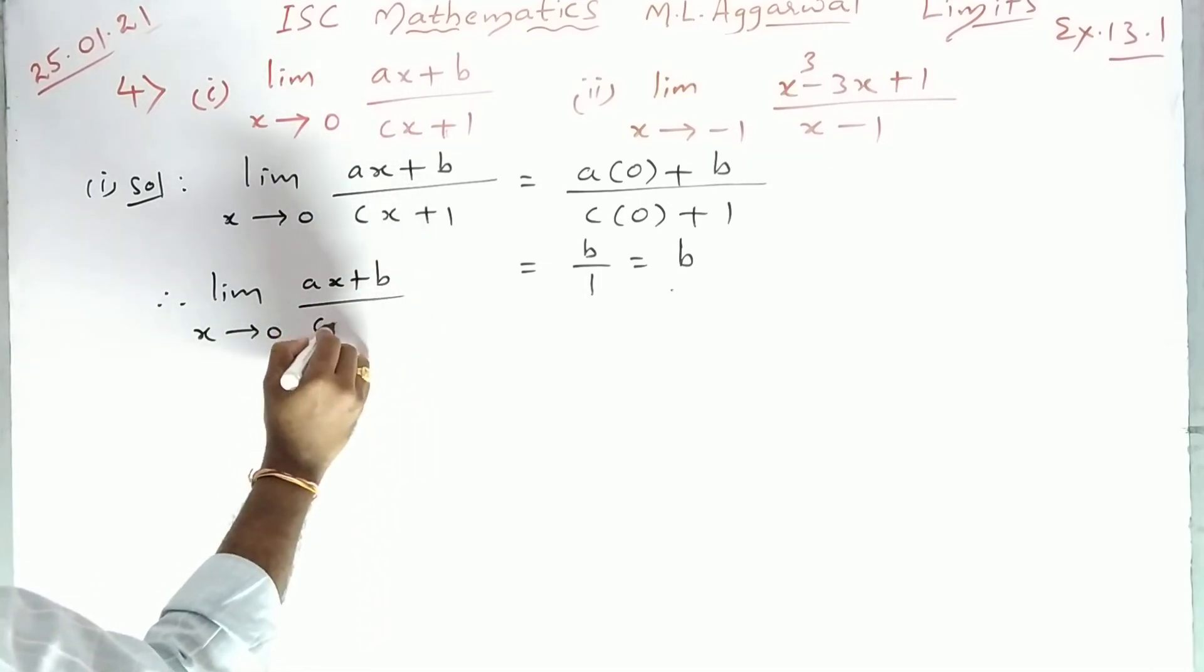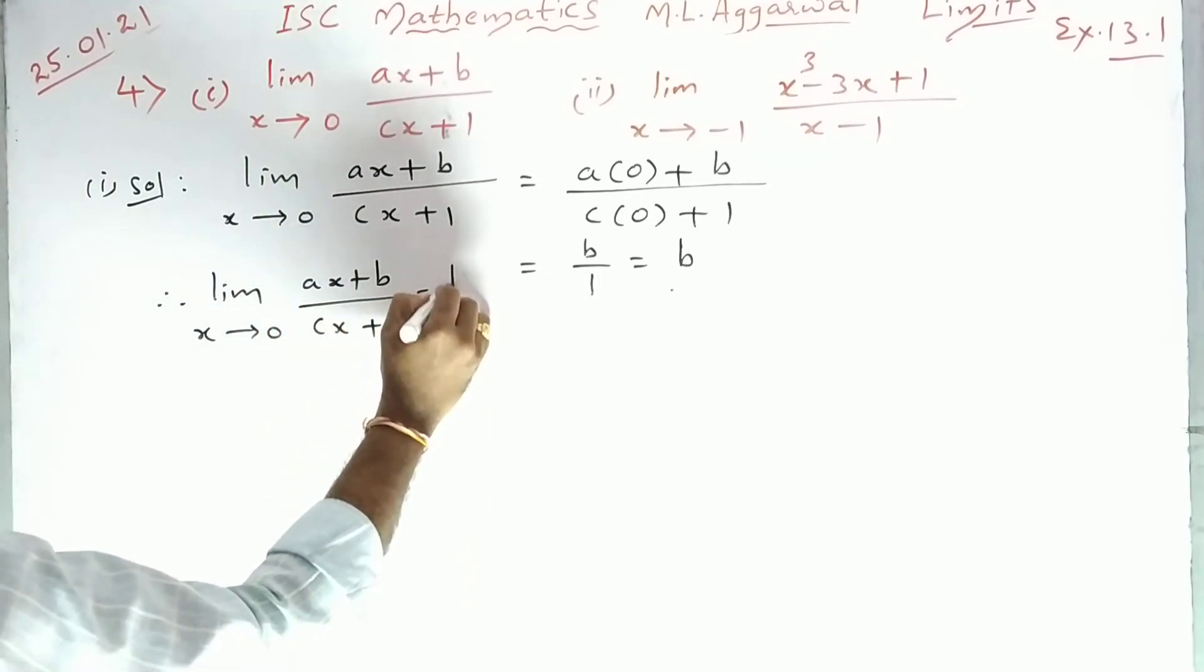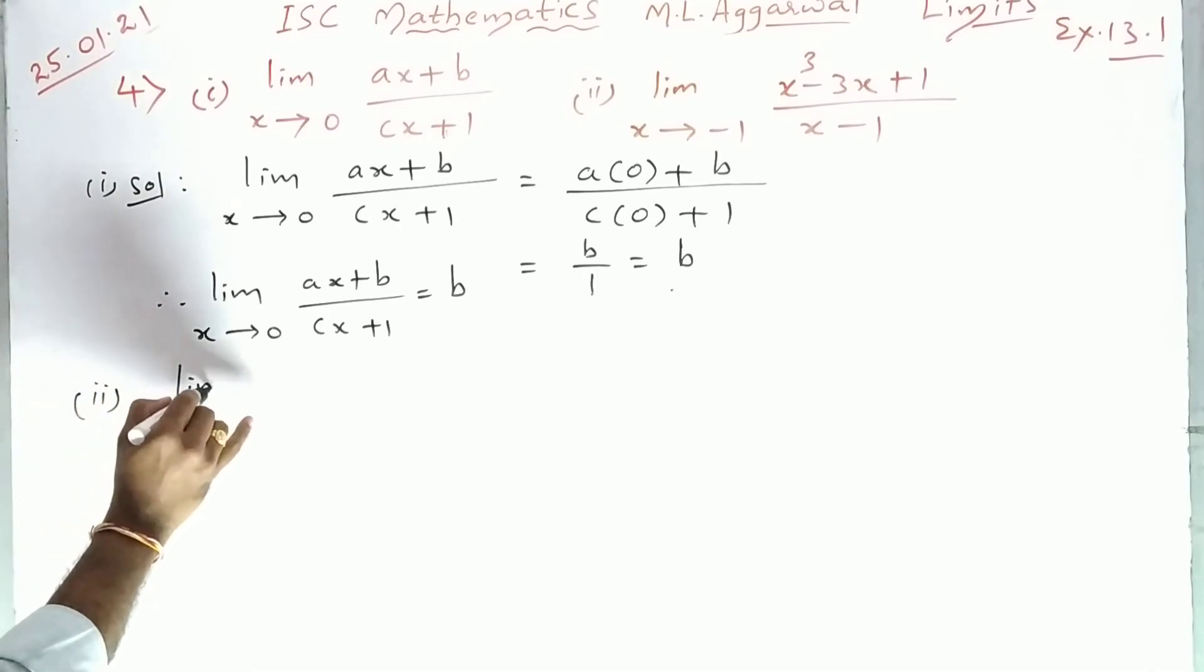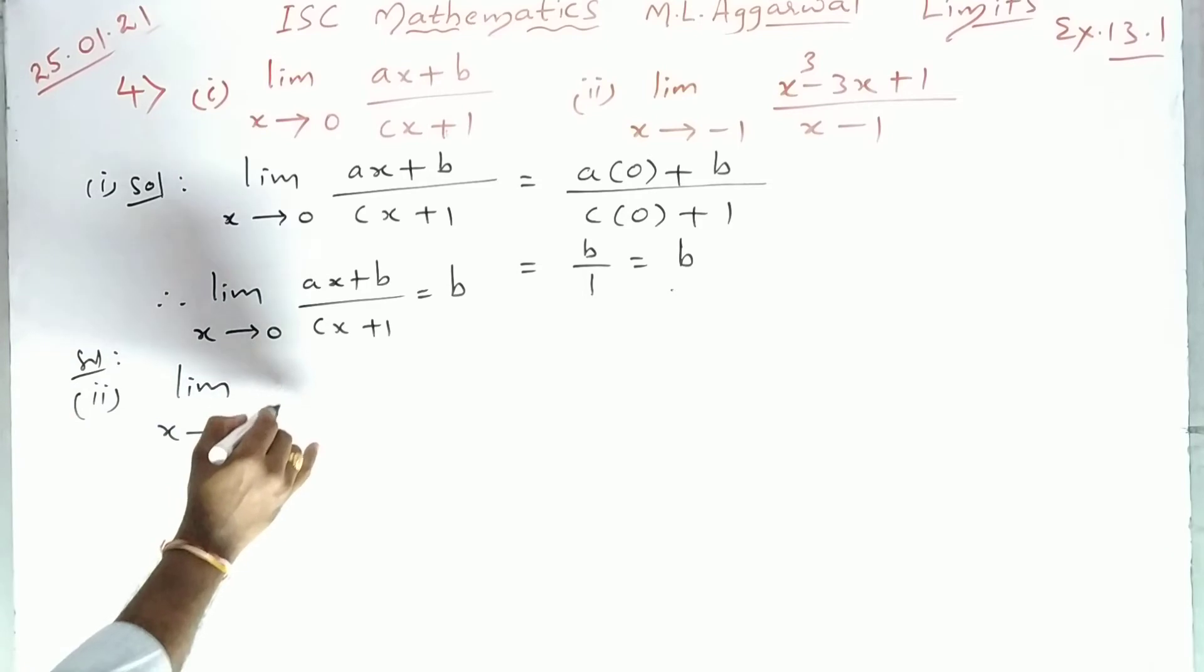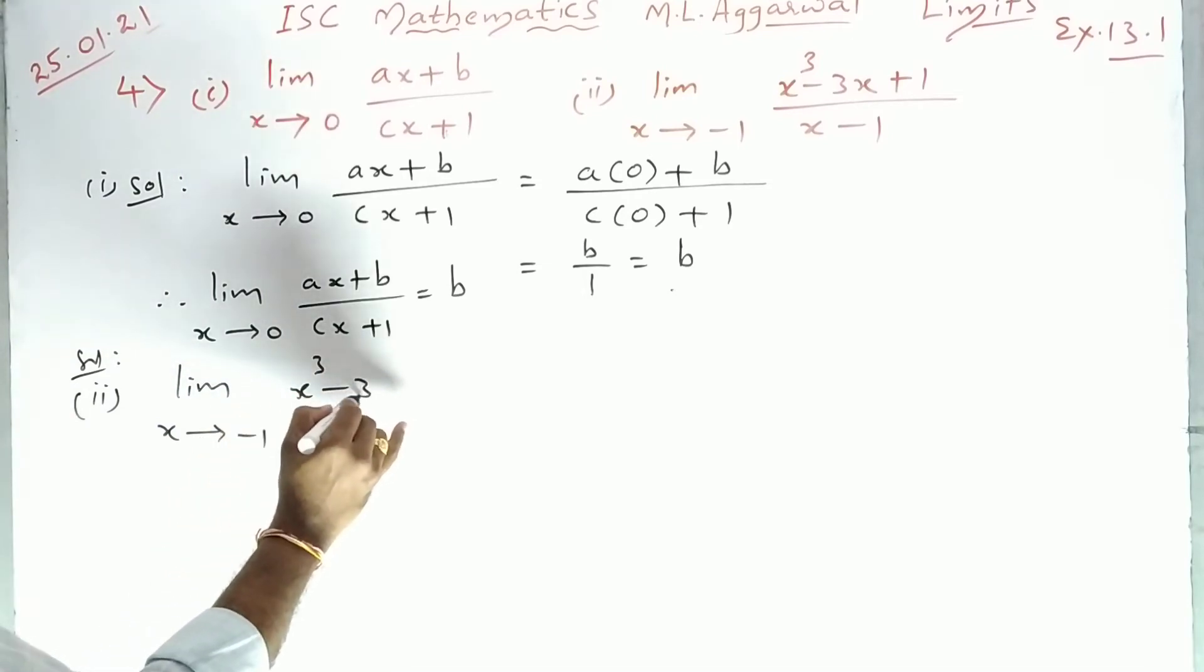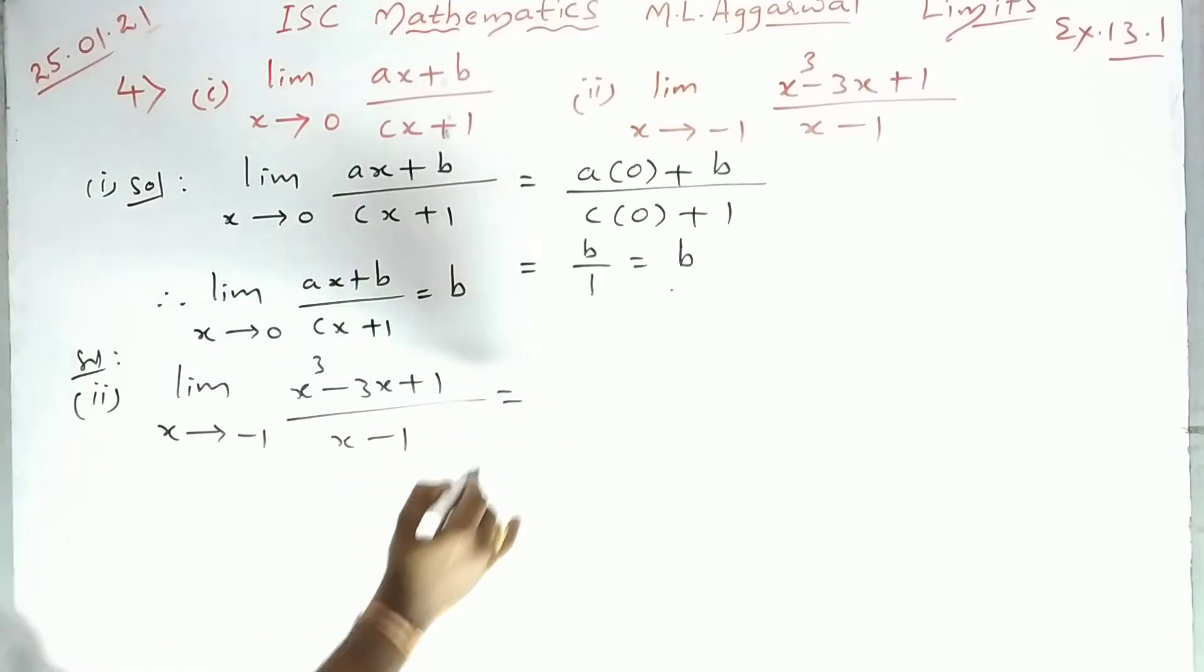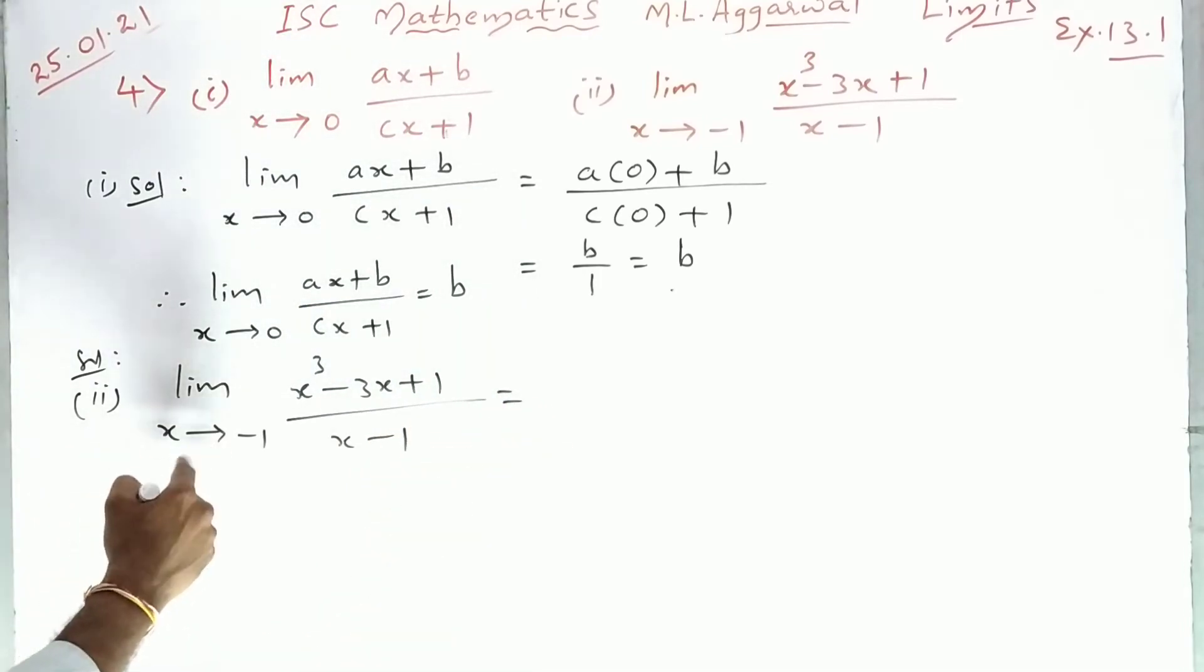Second bit solution: limit x tends to minus 1 of (x³-3x+1)/(x-1). So in the place of x, what should you keep? Minus 1, right.